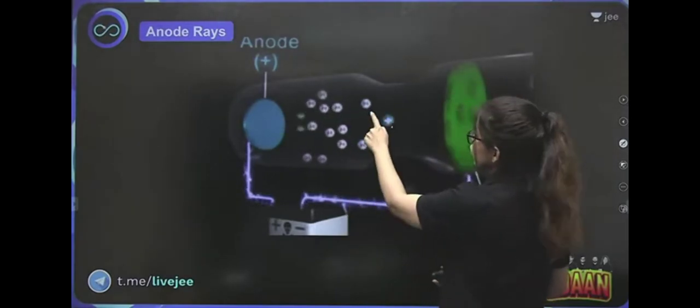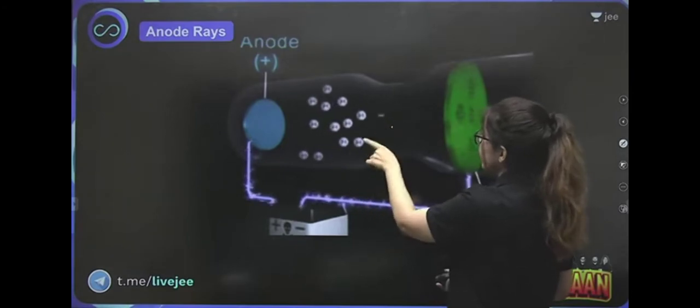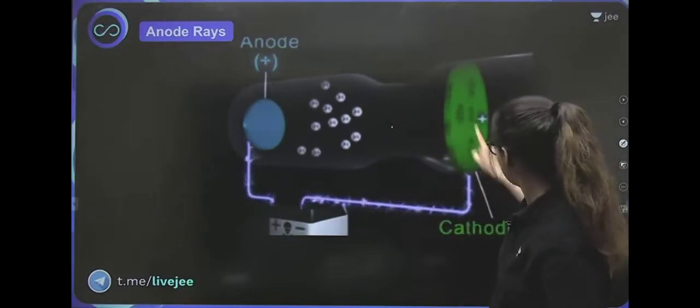Now, what will happen? The positive ions will be attracted to the cathode. If the positive ions move, they will be attracted to the cathode because the cathode is negative.